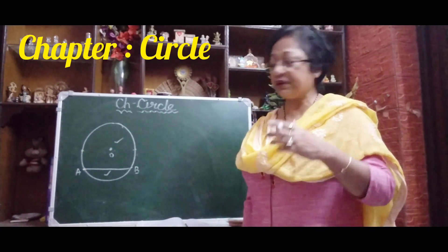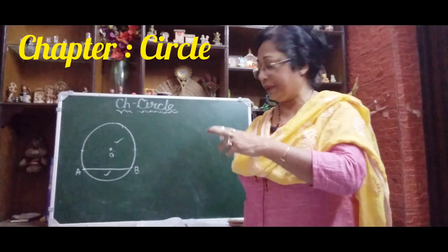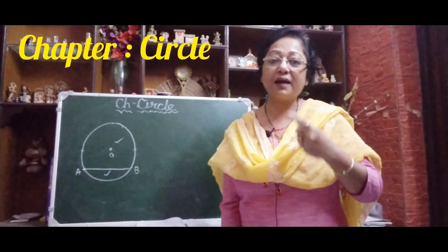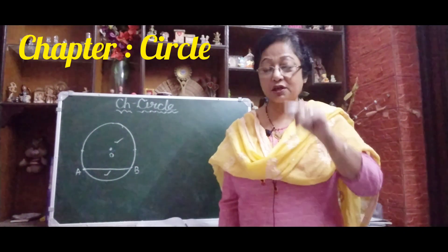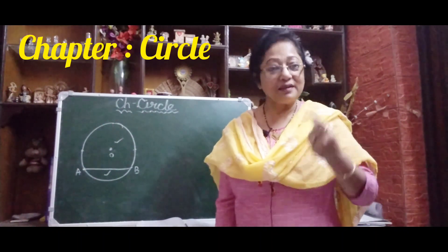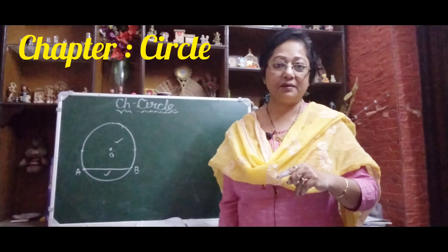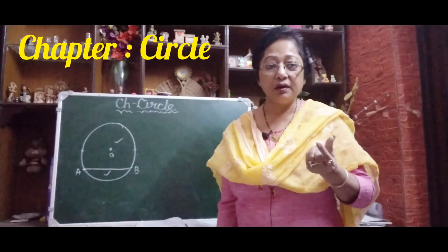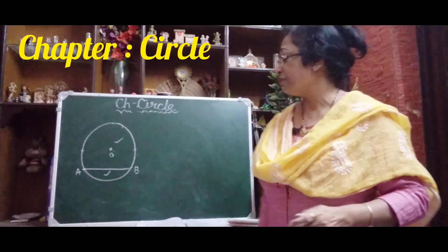If the question asks for the definition of a segment of a circle, you will say four things: first, chord AB divides the circular region into two parts; each part is called a segment. The segment containing the center is called the major segment, and the segment not containing the center is called the minor segment.